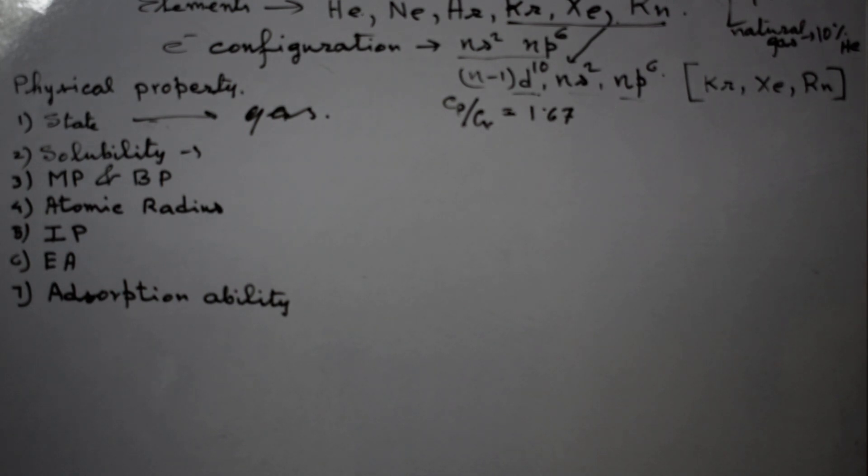Firstly, we can obtain these gases in nature. About one percent of the total air contains these types of inert gases, and natural gases contain 10 percent helium. For your information, Jupiter and Saturn contain huge amounts of helium.